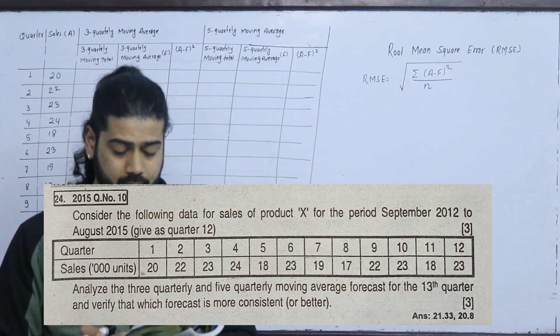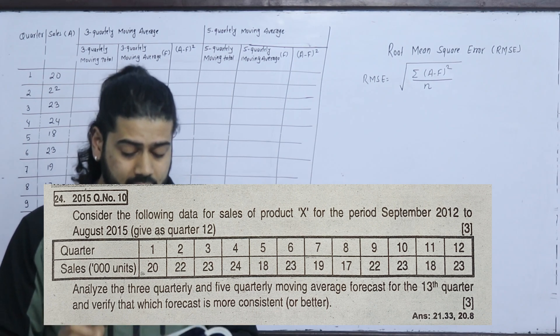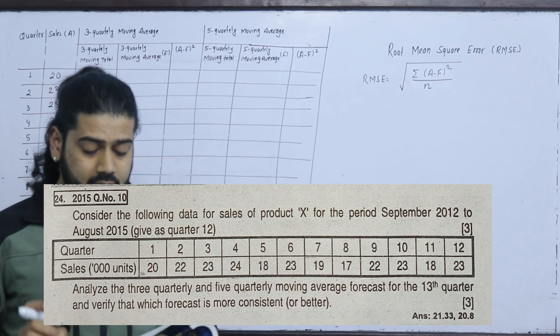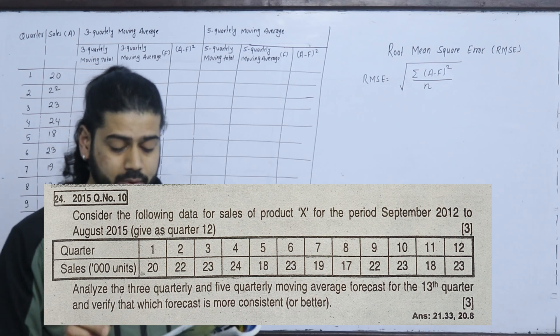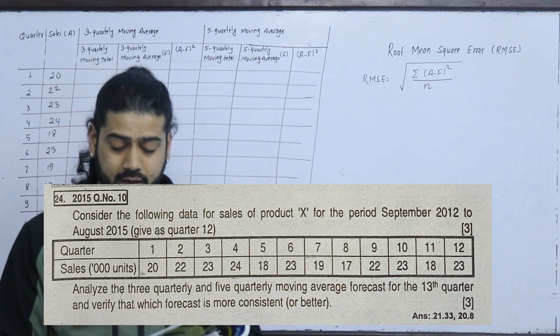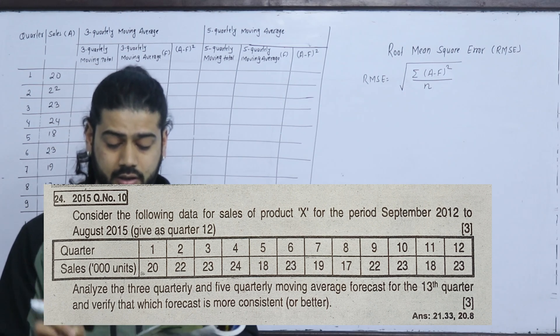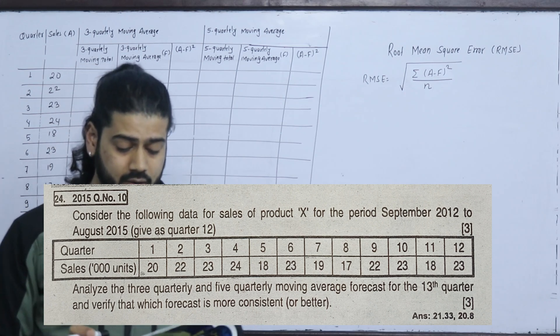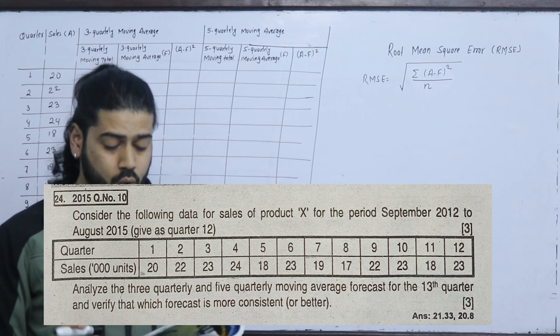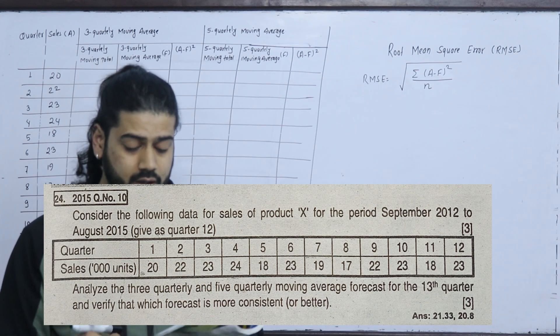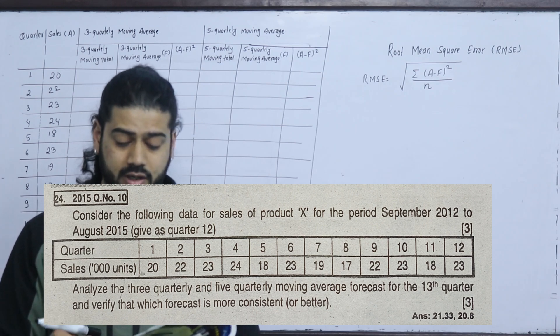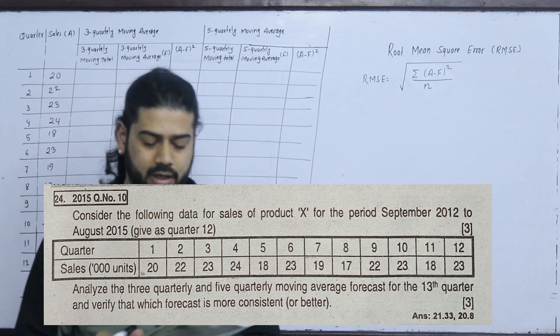Sales are given in thousands. Analyze the 3-quarterly and 5-quarterly moving average forecast for the 13th quarter and verify which forecast is more consistent or better.